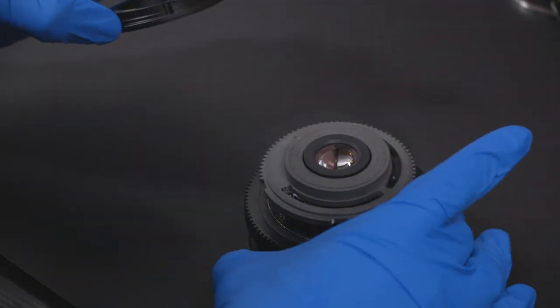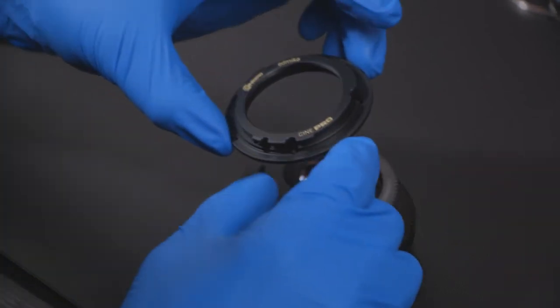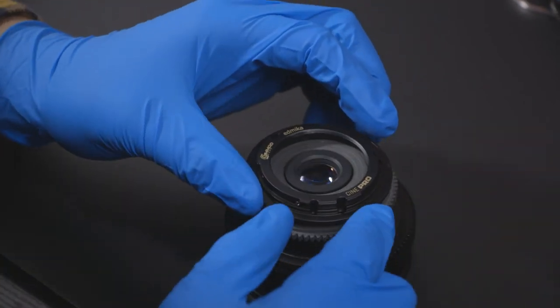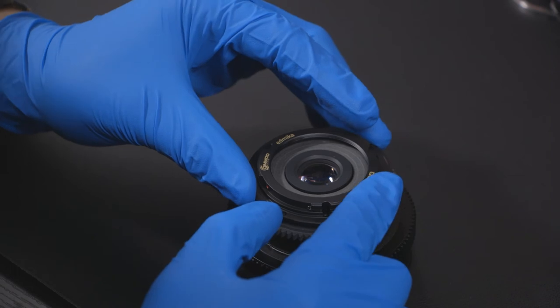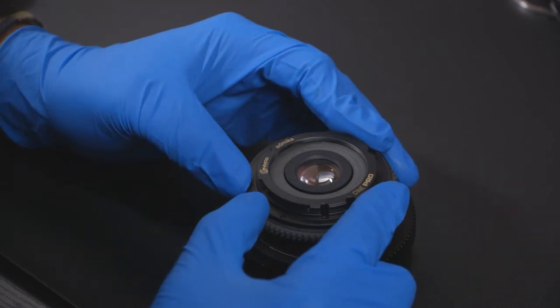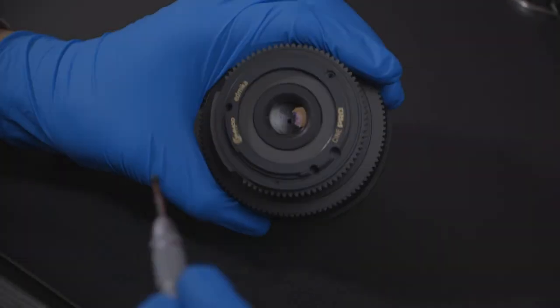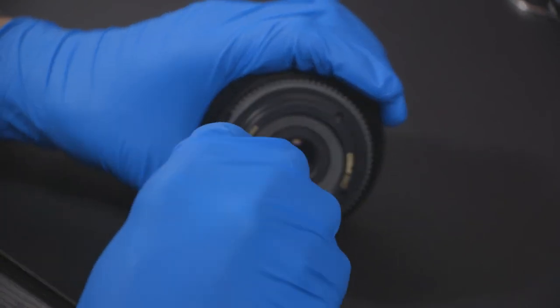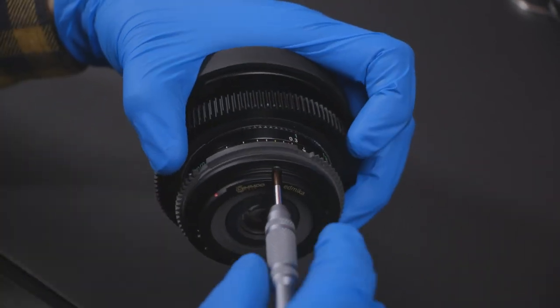Align the EDMICA EF mount onto the depin control ring. Secure the EF mount onto the lens using the three screws we removed earlier.